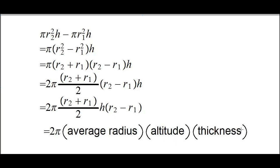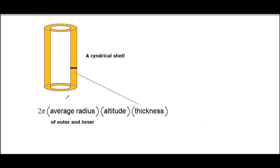What you have here is that for volume of cylindrical shell it is 2π times the average radius of the outer and inner, times the altitude times the thickness. And if we use these three letters, then the volume comes out to be 2πRHD.